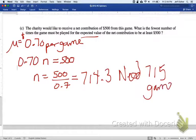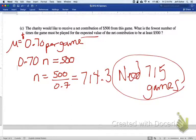714.3. So, they would need 715 games. Can't have a third of a game. They need 715 games to be able to get at least $500. So there's part C. And then lastly, part D.